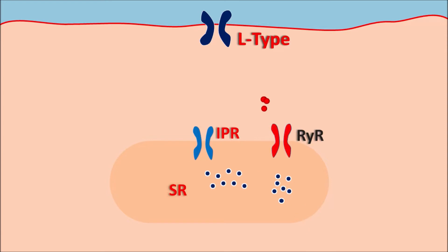The second type of receptor is the ryanodine receptors, which are activated by intracellular calcium levels within the cytoplasm. Whatever calcium enters into the vascular smooth muscle can act on the ryanodine receptors, activating them and leading to more release of calcium from the sarcoplasmic reticulum. In this way, a small amount of calcium can trigger the release of a large amount of calcium from the internal stores — calcium-induced calcium release via ryanodine receptors.